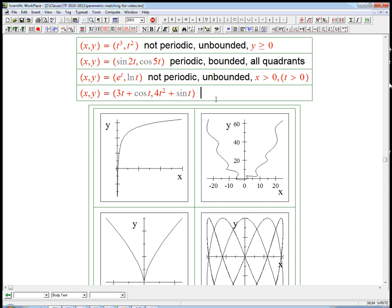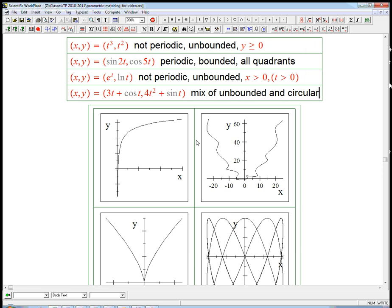This is interesting. This is a mix of progressive behavior. 3t can be big negative, can be small, can be positive. These guys are kind of progressive, but always positive or always non-negative. So it's kind of a mix of unbounded and circular.